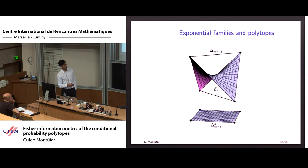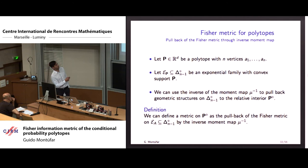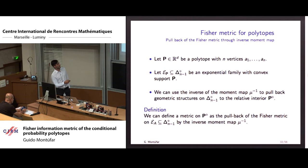We are interested in polytopes, and we know there is a natural way of defining a Riemannian metric in the simplex. Given this identification, we can pull back the geometry from the simplex to this polytope. I have some polytope, I use its vertices as the columns of a matrix which I declare the sufficient statistics matrix of an exponential family, giving an embedding of the polytope as an exponential family in the simplex. With this embedding, I can pull back the Fisher metric from the simplex to the polytope — defining this as the Fisher metric of the polytope via the pullback through the inverse moment map.